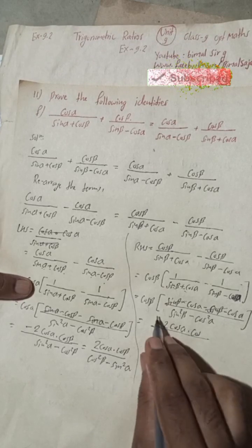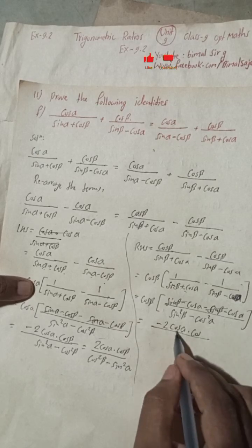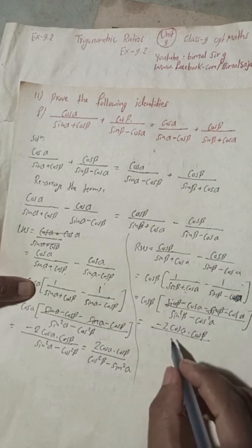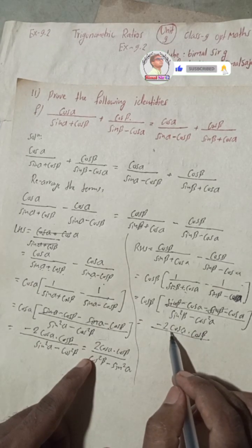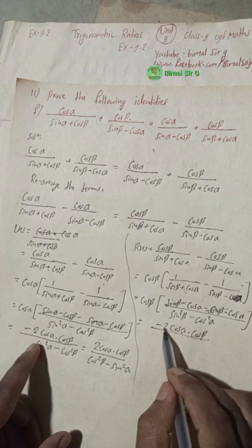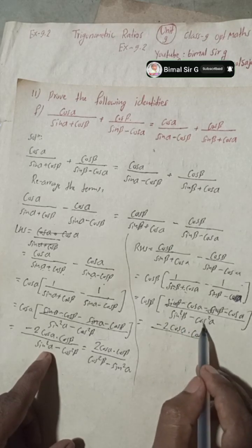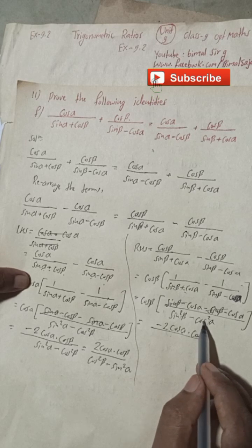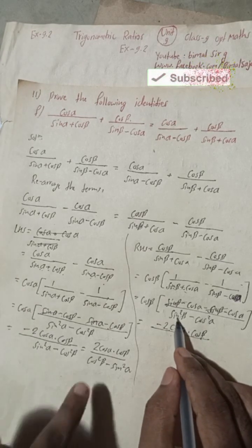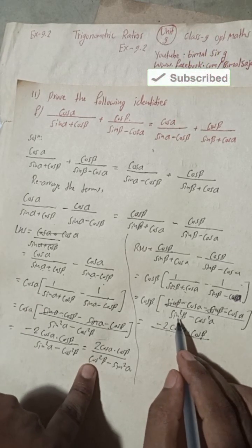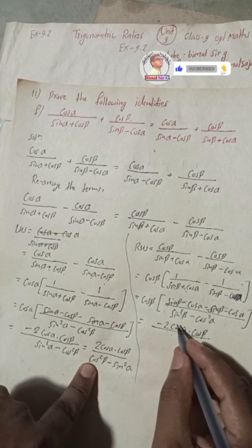So the RHS numerator is minus 2 cos alpha and cos beta is factored outside, giving minus 2 cos alpha cos beta over sin squared beta minus cos squared alpha. Now I need to match this with LHS. I will convert sin squared beta using the identity sin squared beta equals 1 minus cos squared beta.